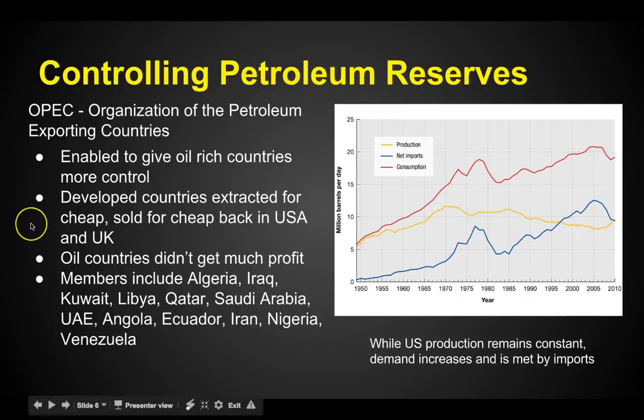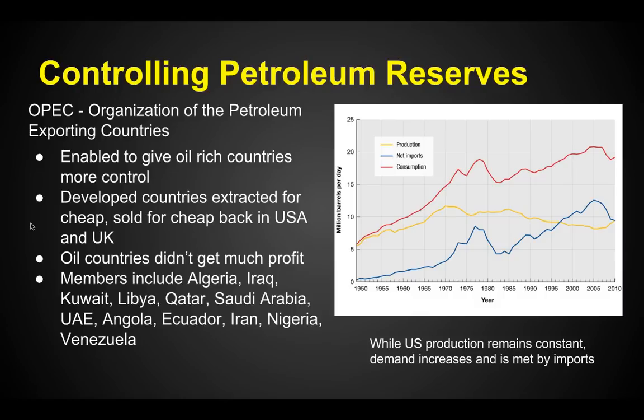Previously, developed countries were extracting oil for cheap and selling it for cheap back in the United States and United Kingdom, so countries like Saudi Arabia didn't get much profit. They came together and said, let's control it. Members include Algeria, Iraq, Kuwait, Libya, Qatar, Saudi Arabia, UAE, Angola, Ecuador, Iran, Nigeria, and Venezuela.